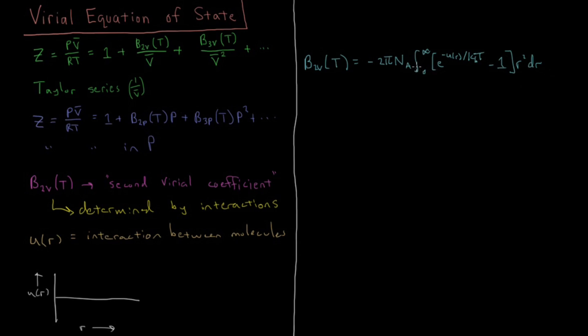So really, this interaction function between a pair of two molecules is all we need to determine this second virial coefficient. And vice versa, if we know what this second virial coefficient is, we could back out a lot of information about what this functional form looks like.